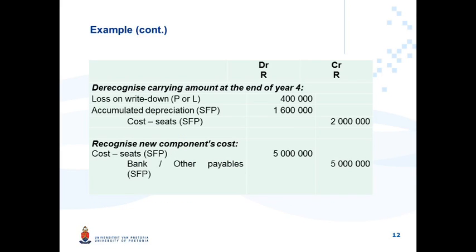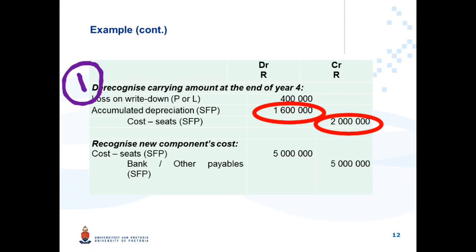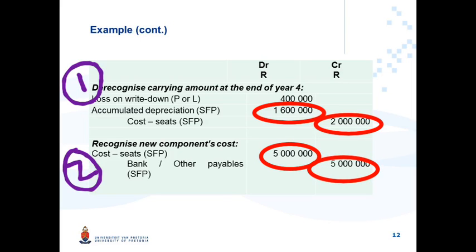Let's look at the journal entries — two things are happening. You have to recognize the new component, but you cannot keep adding to the carrying amount without de-recognizing something. First, de-recognize the old seats: de-recognize the cost of 2 million and the accumulated depreciation of 1.6 million (4 years at 400,000 per year), resulting in a loss on write-down of 400,000 going through profit or loss. That is the first entry — de-recognize the carrying amount of the replaced part. Second, recognize the new component: debit PPE cost 5 million, credit bank or other payables 5 million.